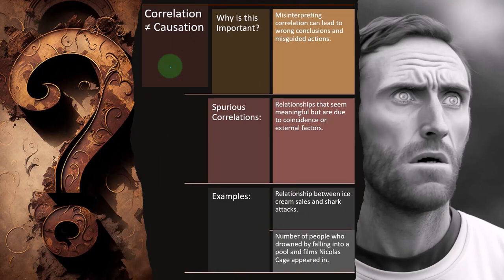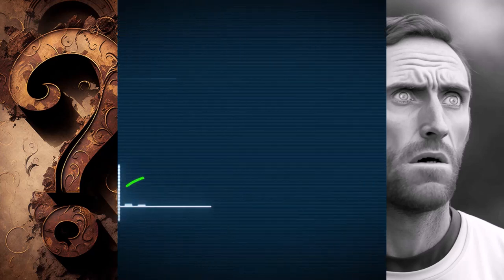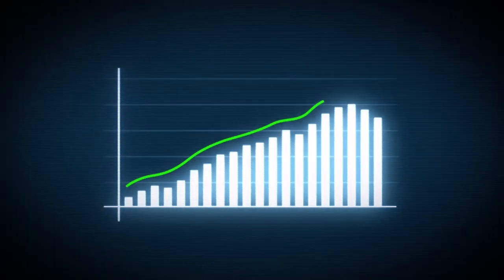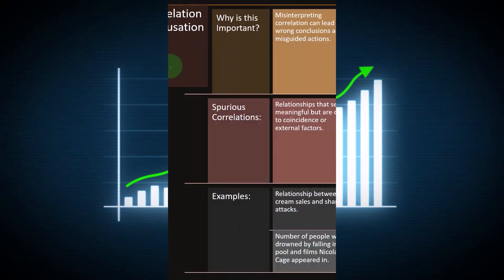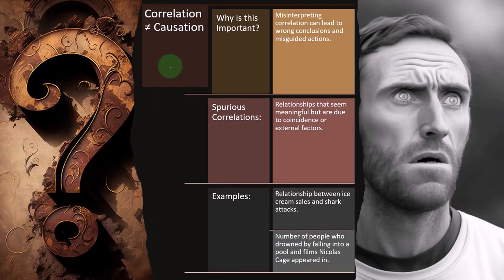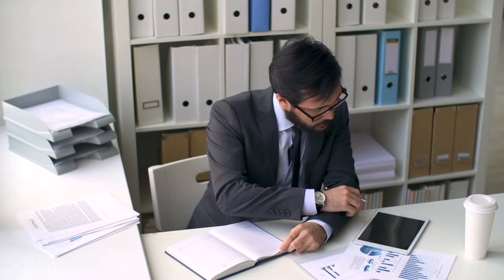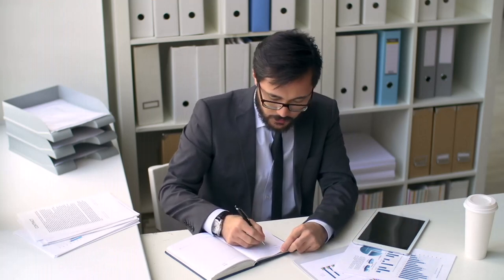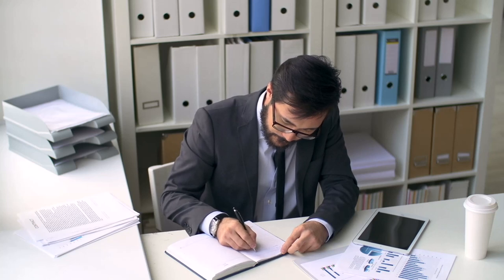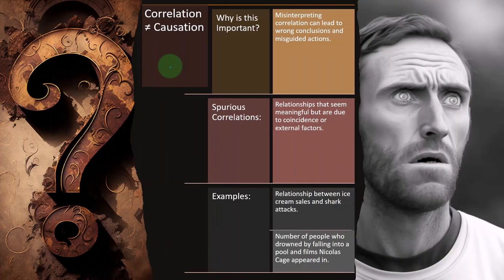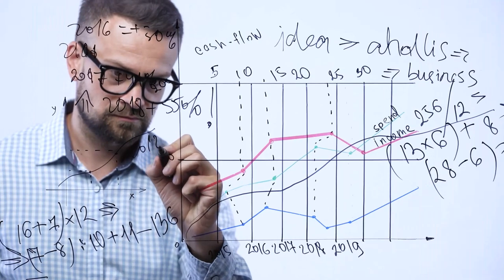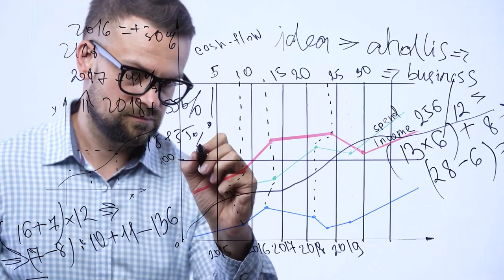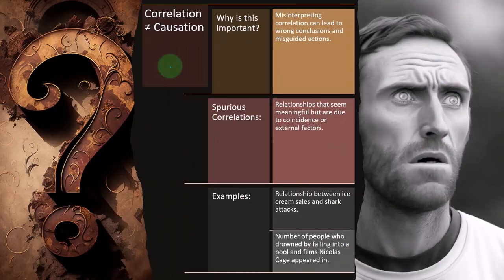If we determine that there is causation, the next question is making sure we have the causal factor correct: what is the causal factor in the cause-and-effect relationship? A common problem — and sometimes a manipulation — is reversing the cause-and-effect relationship between the data points. If you're acting on the assumption that a correlation implies causation but then flip which factor is the cause, that could lead to the wrong action. You need to get the causal factor correct as well.